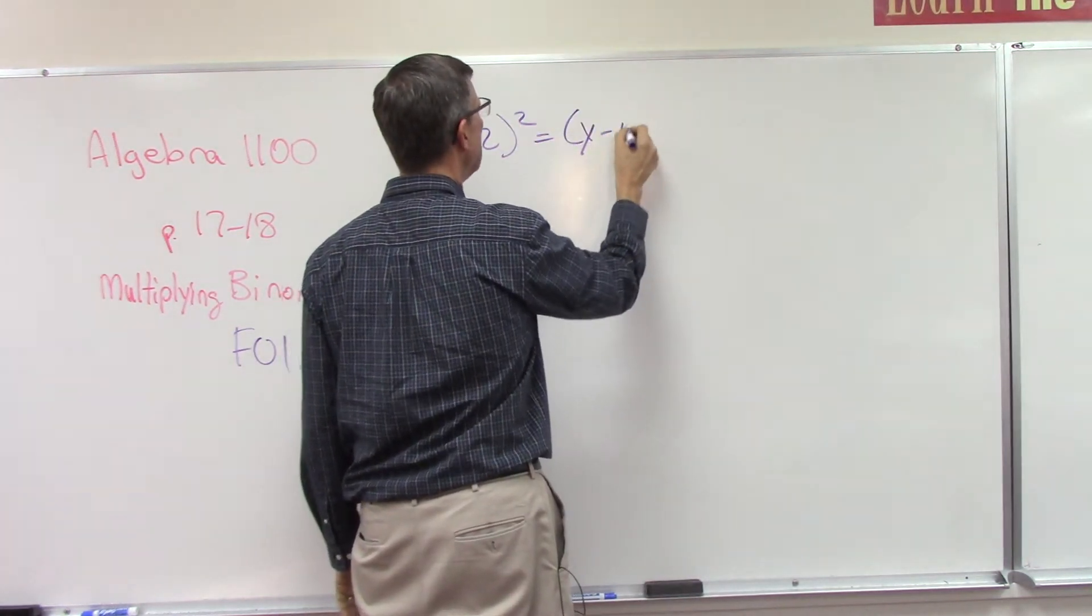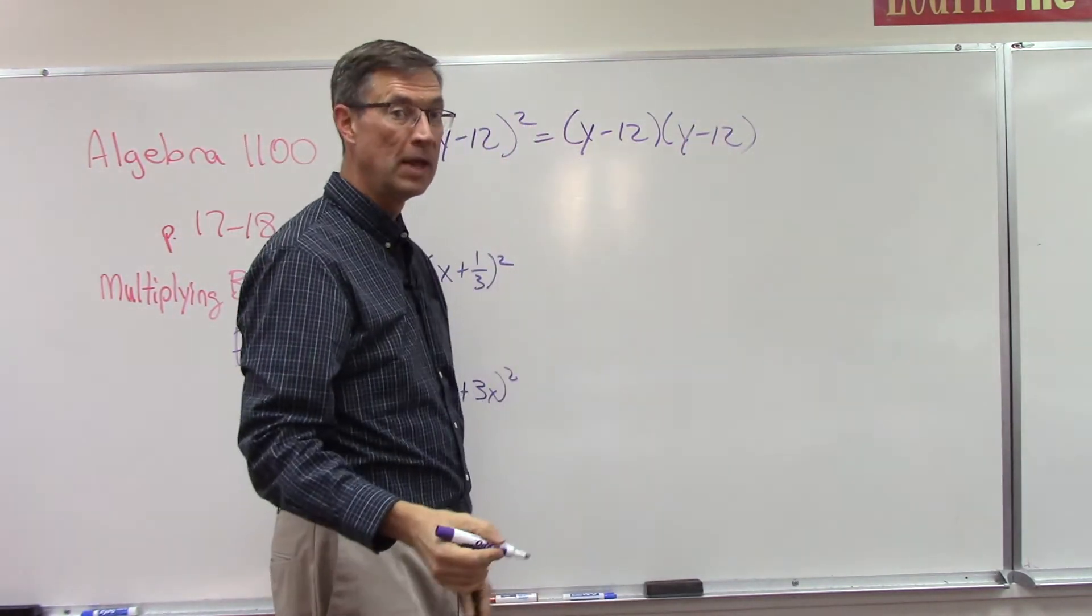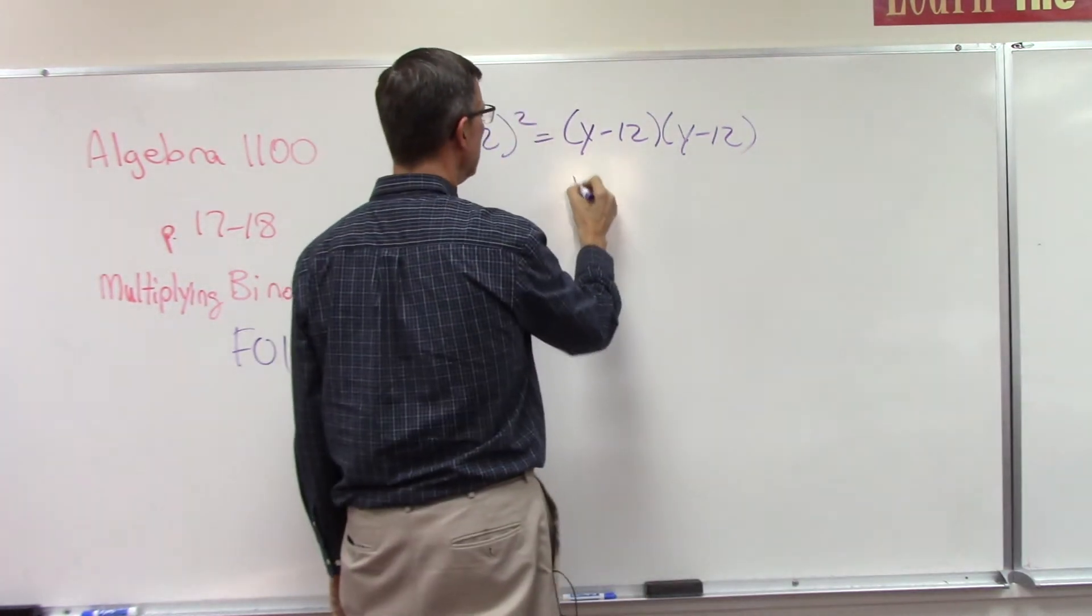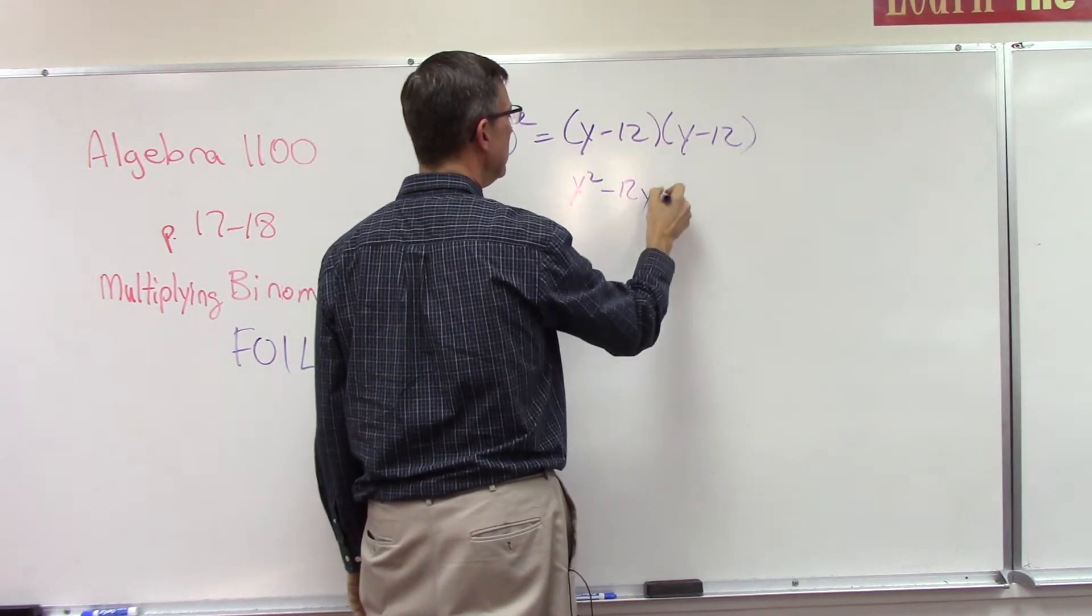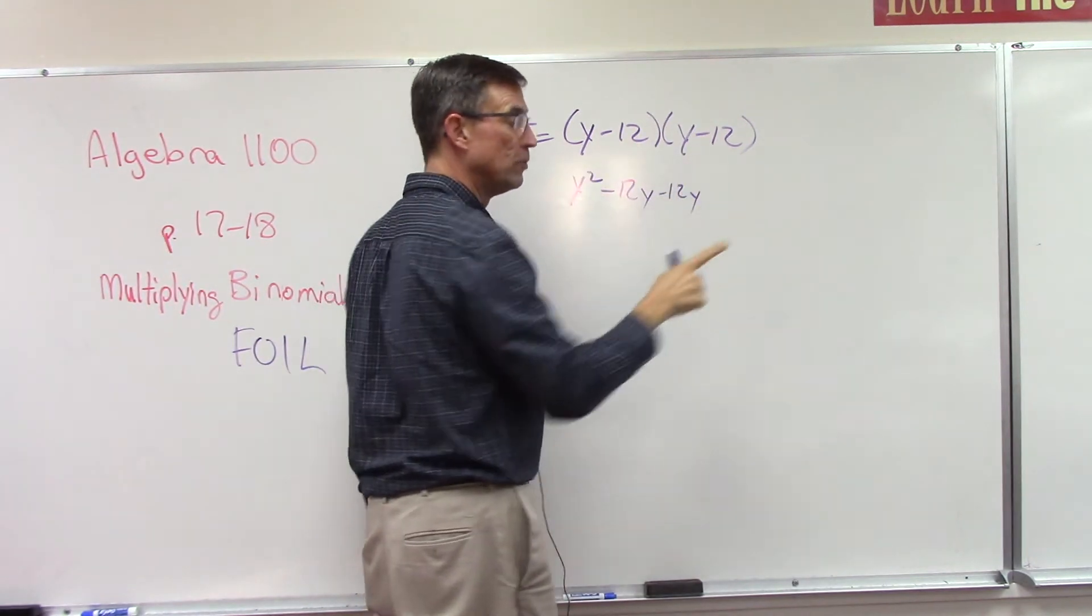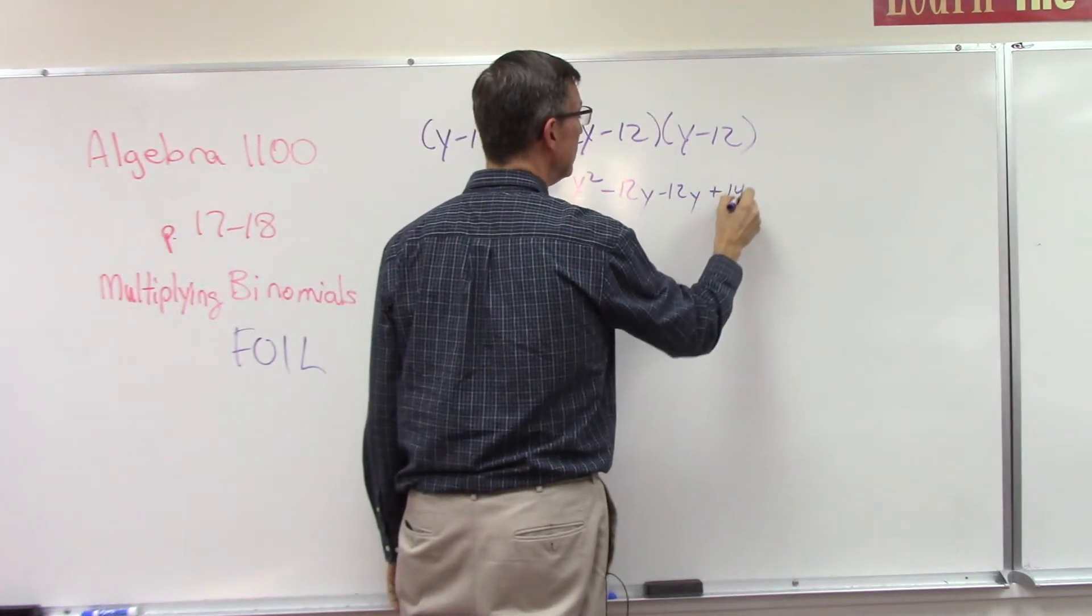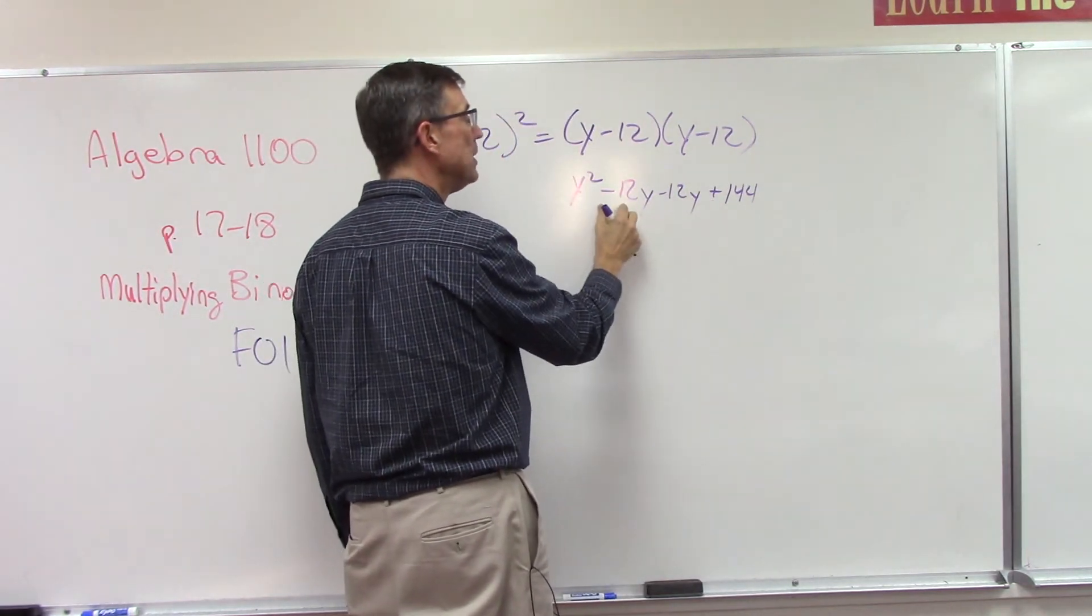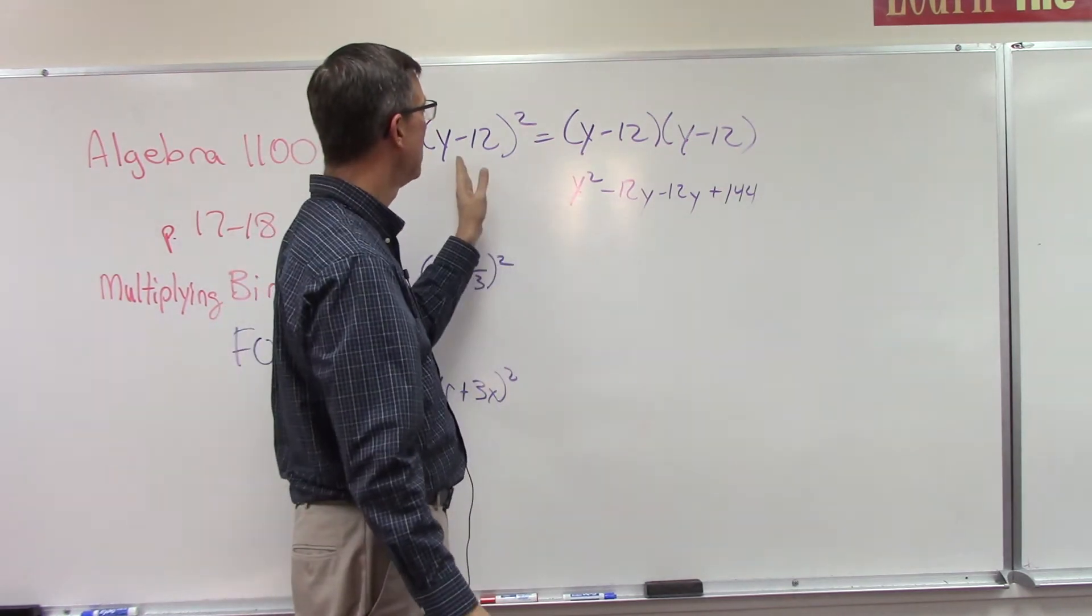Y minus 12 times y minus 12, and then remember our FOIL method—first, outer, inner, last. So the first is indeed y², but then the outer is negative 12y, the inner is negative 12y, and now I have negative 12 times negative 12. Negative times negative, I actually get positive, so there's the 144. But notice it's positive, not negative. And I have these two middle terms, and they don't cancel out. They only cancel out if one is positive and the other is negative.